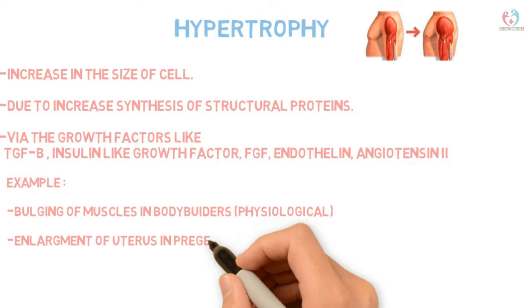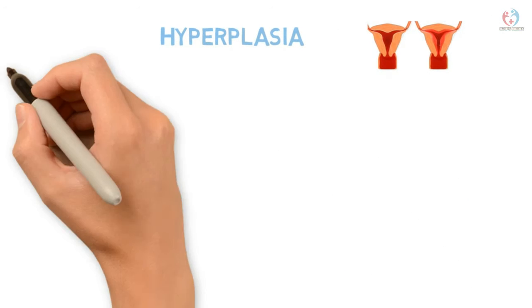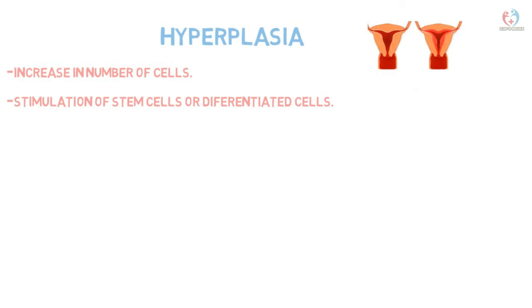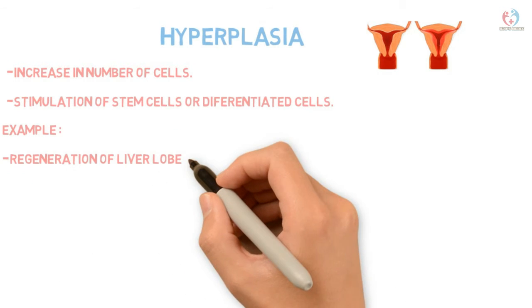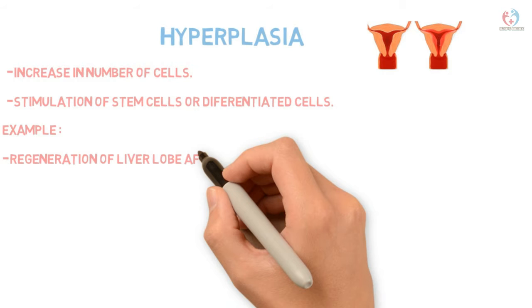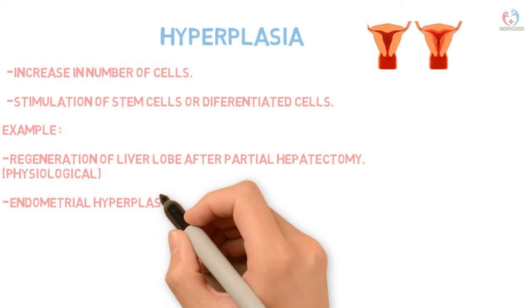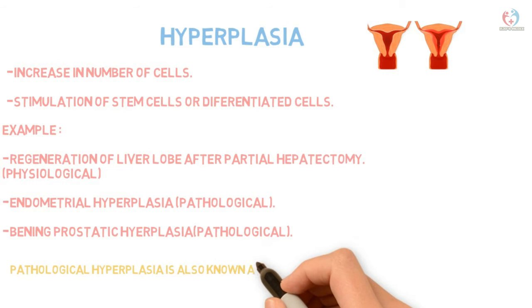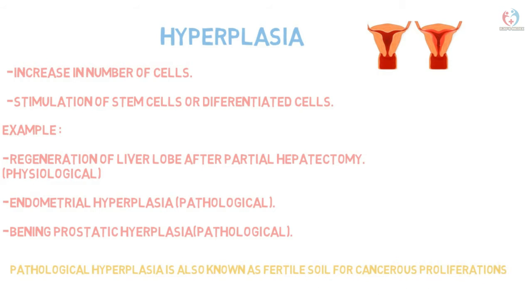Pathological ventricular hypertrophy is an example of pathological hypertrophy. Hyperplasia means an increase in the number of cells, due to stimulation of stem cells or differentiation of cells within physiological limits. An example of physiological hyperplasia is regeneration of a liver lobe after partial hepatectomy, where the liver lobe regenerates over six months to one year. Pathological hyperplasia includes endometrial hyperplasia and benign prostatic hyperplasia. Hyperplasia is also known as a 'fertile soil' because certain cancerous proliferations can arise from it.